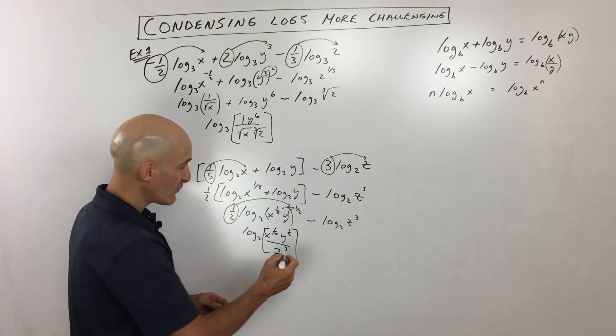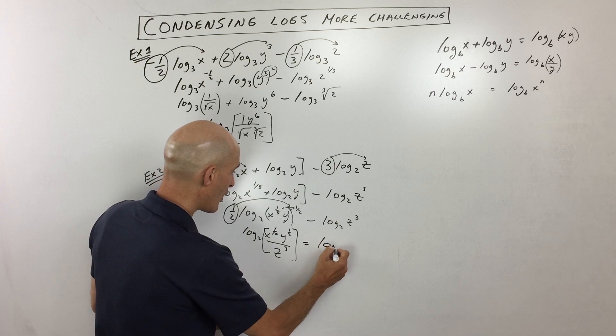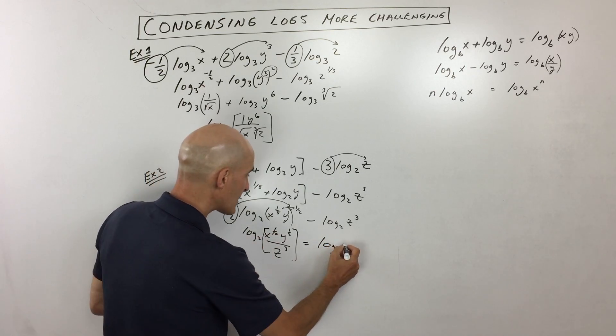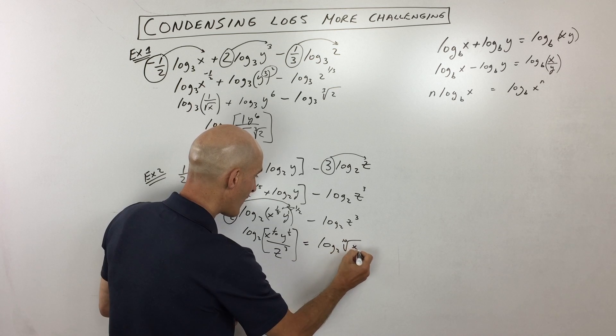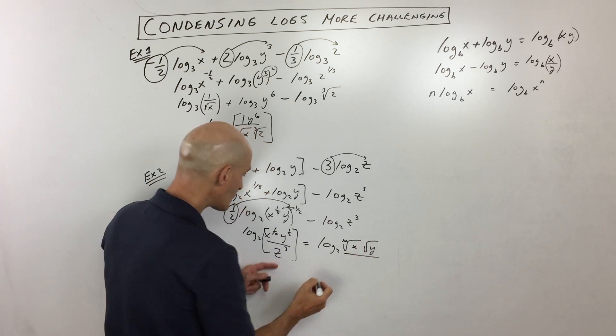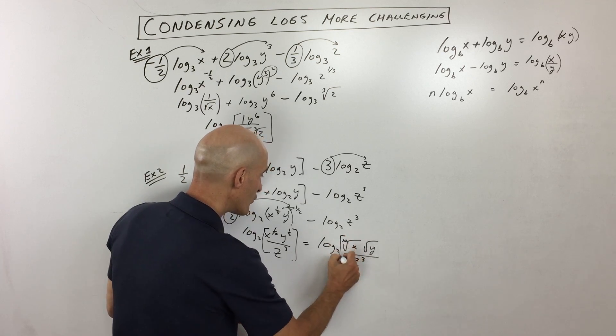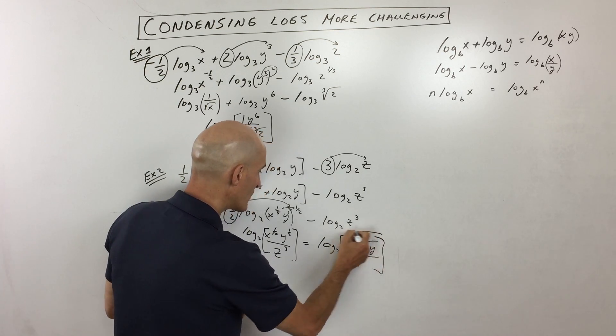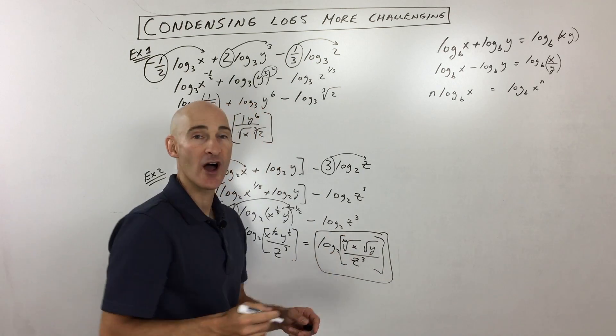And we can leave it like that, but I'm going to simplify it a little bit more. I'm going to say this is log base 2, x to the 1 10th power is really like the 10th root of x, y to the 1 half power is like the square root of y, and that's all over z cubed. And I'm just going to put a bracket around all of that. So what we did is we condensed this all into one logarithm.